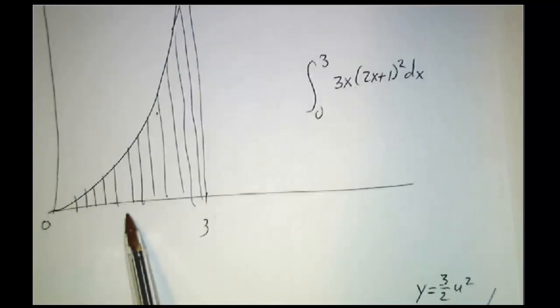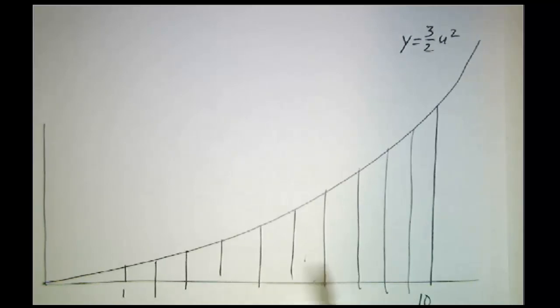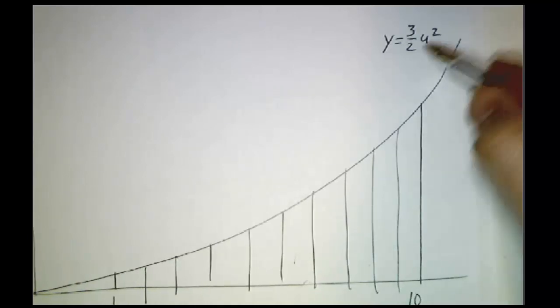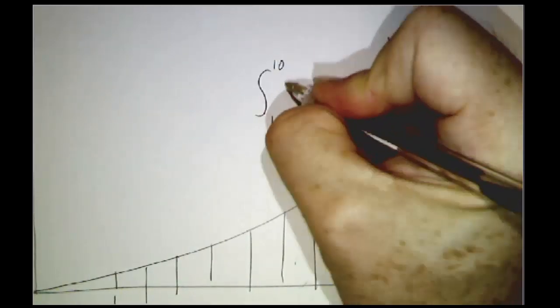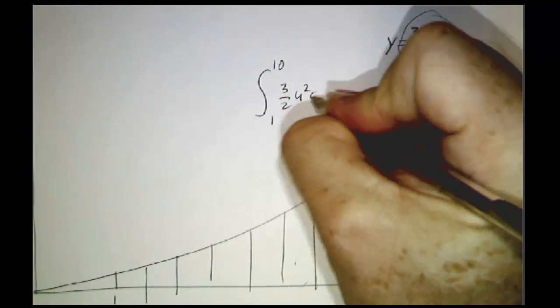And each of these strips corresponds exactly to one of these strips. If you chop this into 10 pieces, you would get 10 strips over here. They wouldn't be exactly the same width, but you'd still have 10 strips. And you would say, we are integrating 3 halves u squared. So this is going to be the integral from 1 to 10 of 3 halves u squared du.